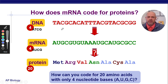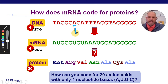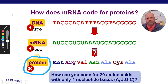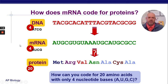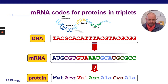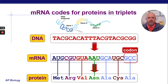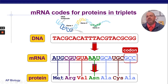There are 20 amino acids. How can you code for 20 amino acids with only four nucleotide bases? They figured out that mRNA codes for proteins in triplets — groups of three called codons — and each codon codes for an amino acid. The string of amino acids then makes the protein. Amino acids are the building blocks of proteins.